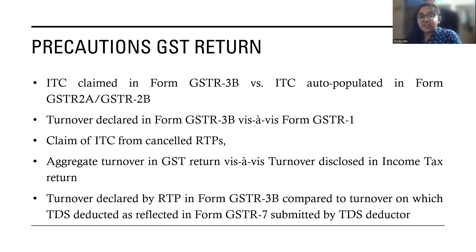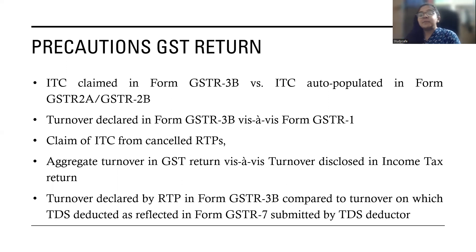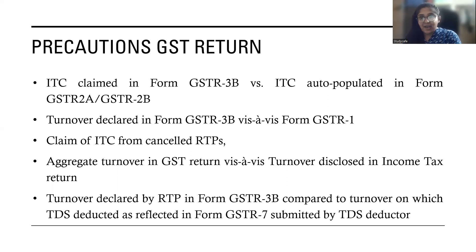You also need to check the GSTR-7 amount of TDS and verify whether it matches the turnover shown in GSTR-3B. When TDS is deducted — for example, on a transaction of 100 rupees, 2 rupees TDS is deducted and paid to the government entity — the government has a mechanism to check whether the remaining balance has been properly declared. If it is not declared correctly, they will issue you a notice.